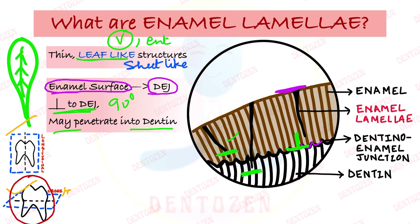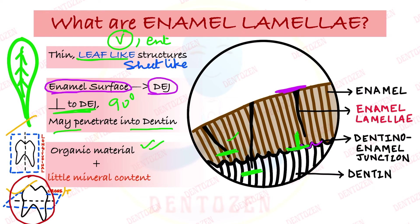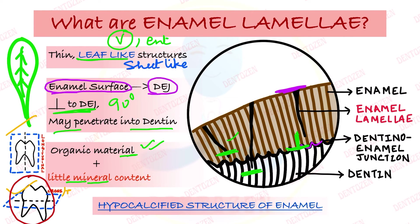Enamel lamellae are made up mainly of organic material with very little mineral content. So they are hypocalcified structures — hypo meaning less. This is very important for your long question on hypocalcified structures of enamel.